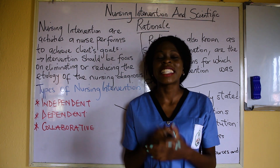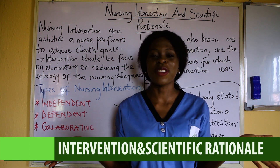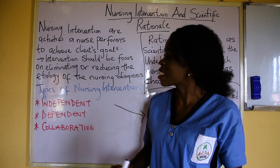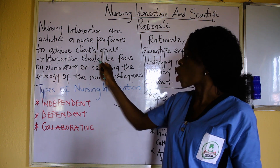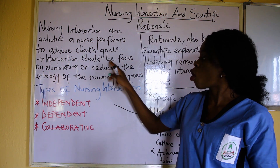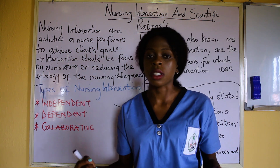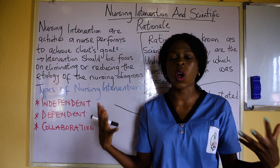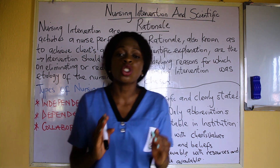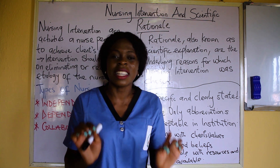Today we are going to be talking about nursing intervention and scientific rationale. What do we mean when we say nursing intervention? Nurses are intervening — nurses are doing something. Nursing interventions are activities a nurse performs to achieve a client's goal. Intervention should be focused on eliminating or reducing the etiology of the nursing diagnosis — etiology simply means the cause. So whenever you hear nursing intervention, it is asking: what am I going to do to ensure that my goal and objective will be accomplished?